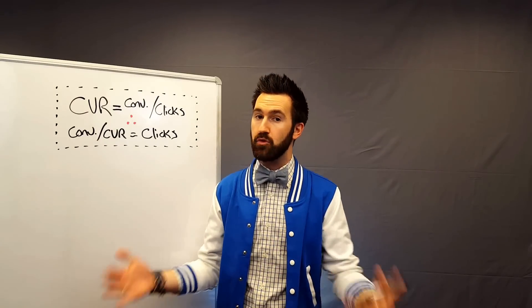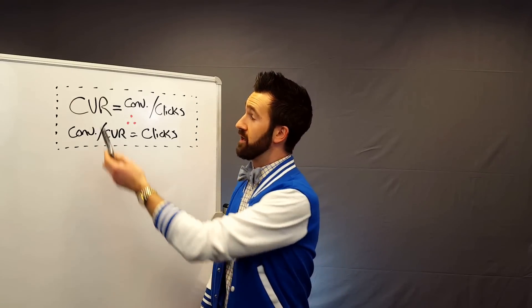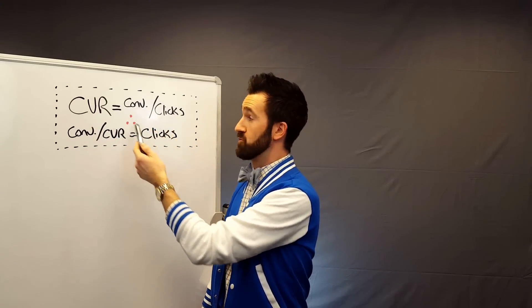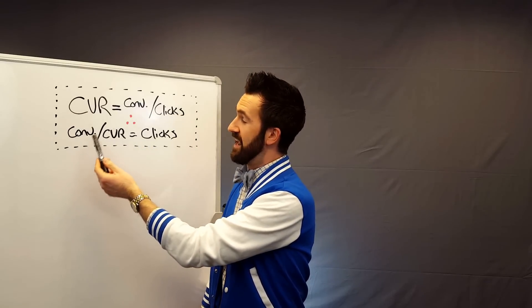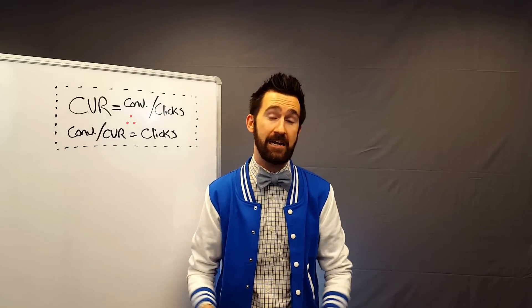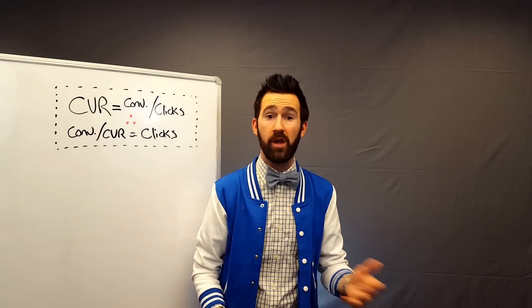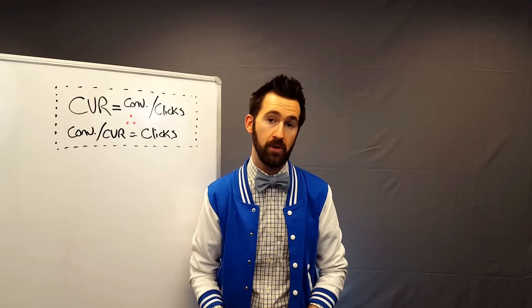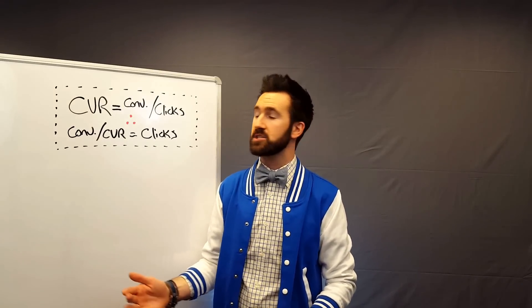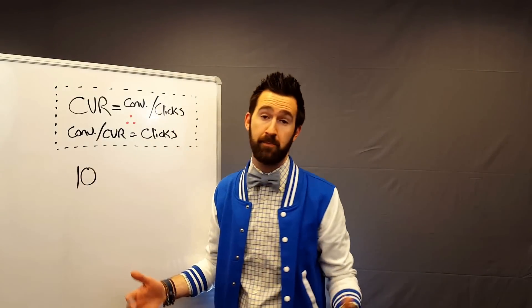How do we get the number of conversions? We already know that conversion rate equals conversions divided by the number of clicks. As a result, if we have a number of conversions and we know our conversion rate, we can calculate the number of clicks we may need in order to test. What's the number of conversions we need? 1, 2, 3? Probably too few. 20, 30? Probably too many — that's when things get expensive. Let's talk about 10 conversions as a pretty decent number in order to get a good sample set.